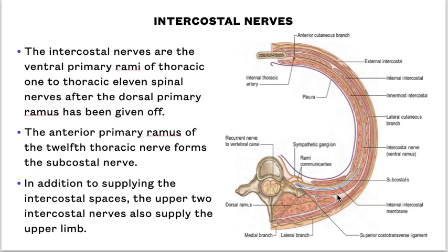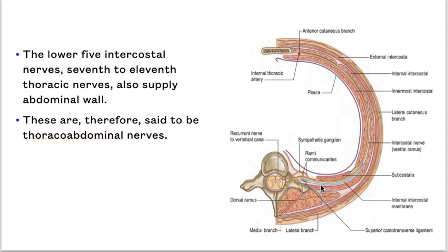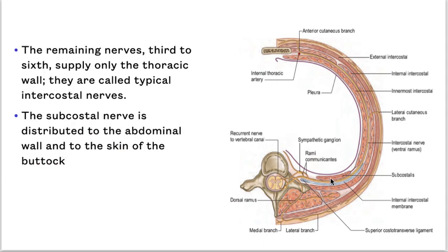In addition to supplying the intercostal spaces, the upper two intercostal nerves also supply the upper limb. The lower five intercostal nerves, 7th to 11th thoracic nerves, also supply the abdominal wall and are therefore called the thoraco-abdominal nerves. The remaining nerves, third to sixth, supply only the thoracic wall and are called the typical intercostal nerves. The subcostal nerve is distributed to the abdominal wall and to the skin of the buttock.